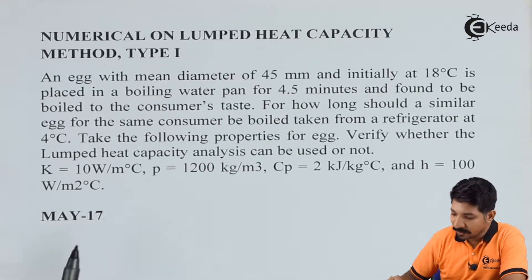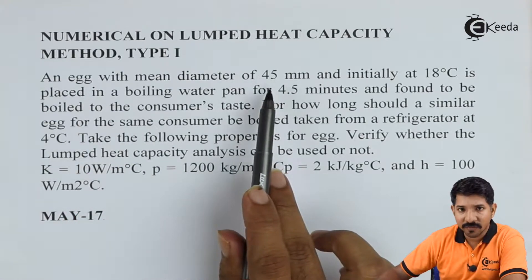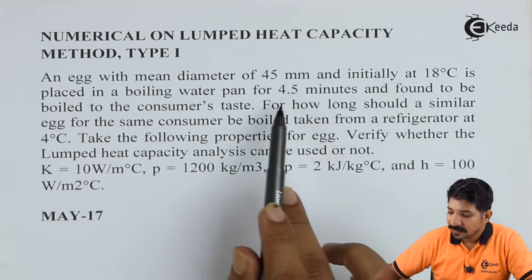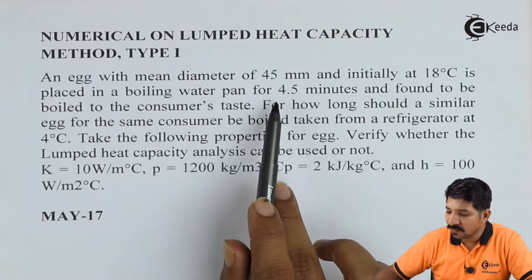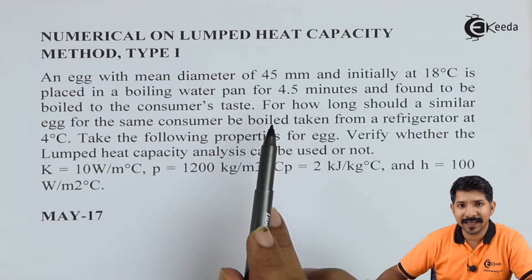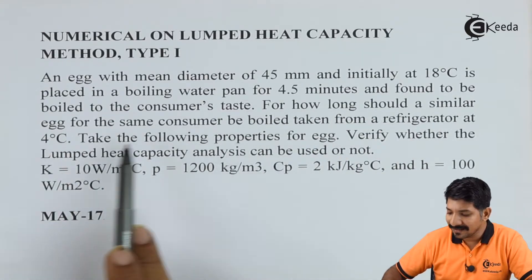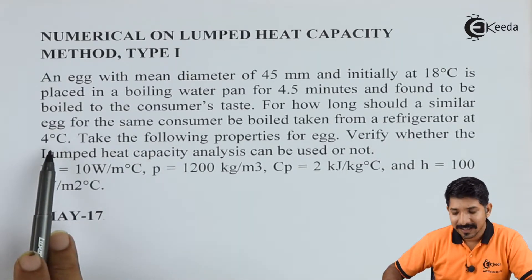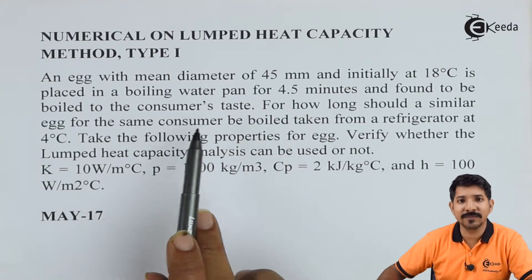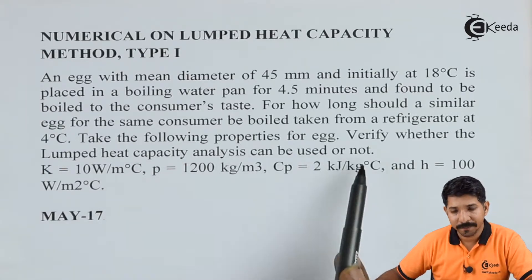Now let us start solving the given problem. They have given an egg with a mean diameter of 45 mm, initial temperature of 18 degrees Celsius. The egg was kept in the boiling pan for 4.5 minutes, at the end of which the consumer found the taste to be good. We need to find the temperature at that state. In the second case, if the egg is taken from the refrigerator at 4 degrees Celsius, what time is needed to achieve the same temperature? They also ask us to verify whether lumped heat capacity analysis is applicable.